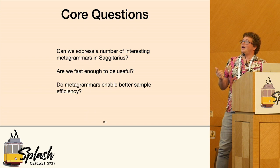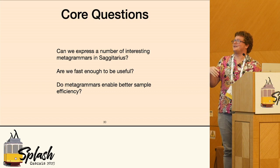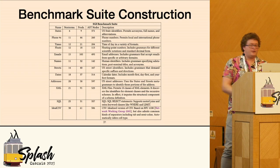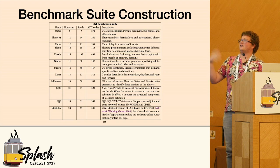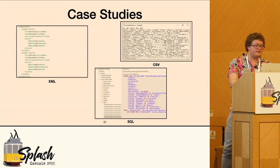Do we still need 690-some examples to generate easy grammars? To answer the first question, we constructed a benchmark suite of a lot of metagrammers ranging from things like states to things like email addresses to SQL. And we also did three case studies on XML, CSV, and SQL.